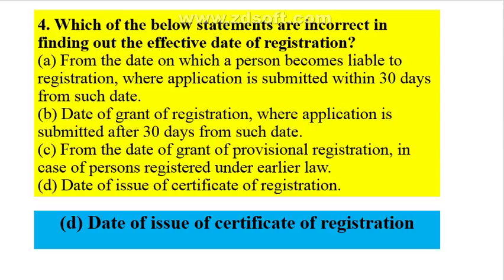Which statement is incorrect in finding out the effective date of registration? The effective date of registration would not be the date of issue of the certificate of registration. It is: from the date on which a person becomes liable to registration where the application is submitted within 30 days; the date of grant of registration where application is submitted after 30 days; or the date of grant of provisional registration for persons registered under earlier law.